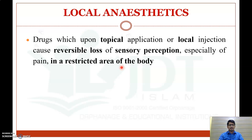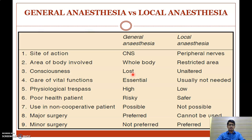We had discussed general anesthetics in a previous video. General anesthetics affect mainly the CNS, involving all areas of the body, causing loss of consciousness, requiring care of vital functions, carrying a high risk for physiological emergencies, being very risky in poor-health patients, usable in non-cooperative patients, and preferred in major surgery rather than minor surgery.